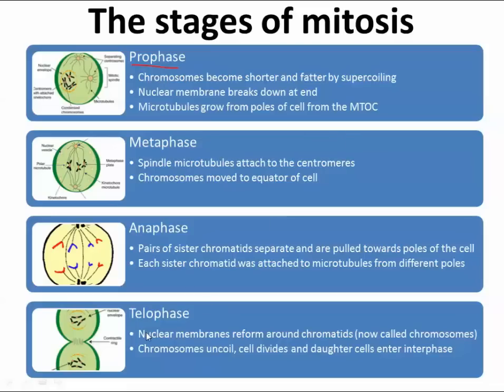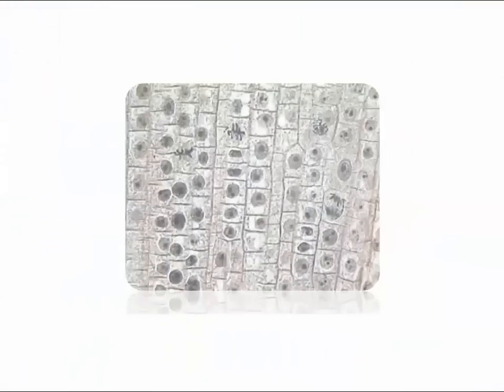The nuclear membranes reform around each new cell. Now we can call these chromosomes again — before, they were chromatids. They uncoil, the cells divide, and the daughter cells enter interphase. During interphase, the cell does its regular thing: it makes proteins, hormones, enzymes, carries out cellular respiration, and eventually those cells can go through this whole process again if necessary.